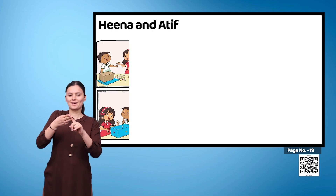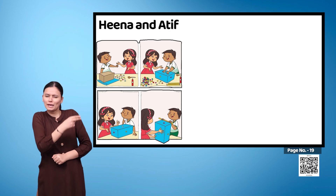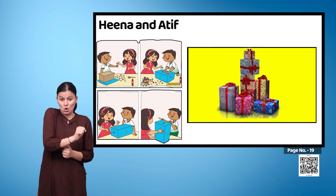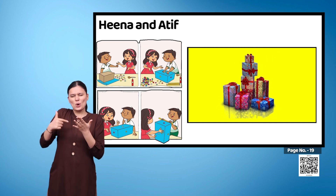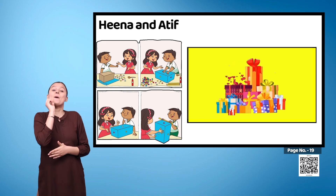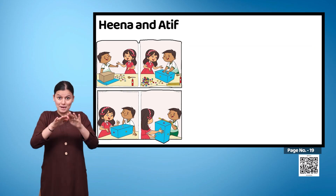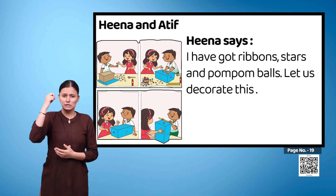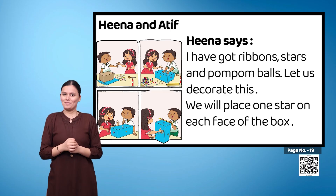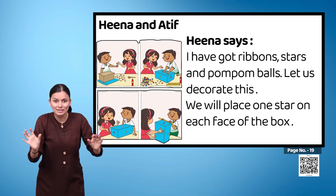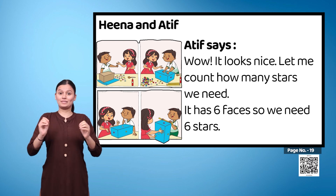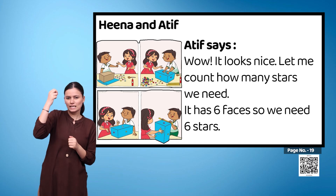Heena and Atif are preparing a gift box which is rectangular in shape. They want to put a gift for their friend's birthday in this box and decorate it. Heena says: 'I have got ribbons, stars, and pom-pom balls. Let us decorate this. We will place one star on each face of the box.' Atif says: 'Wow, it looks nice. Let me count how many stars we need — it has six faces, so we need six stars.'